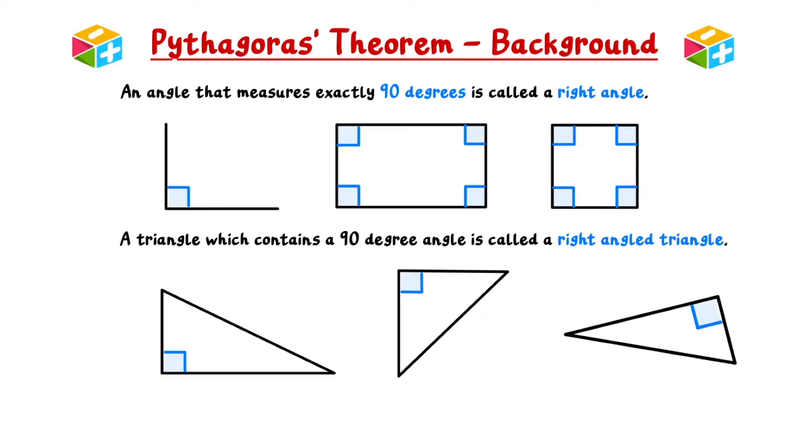When applying Pythagoras' theorem, it's crucial to confirm that we're working with a right angle triangle, as the theorem exclusively applies to this situation. If the triangle is not right angled, then Pythagoras' theorem cannot be used.